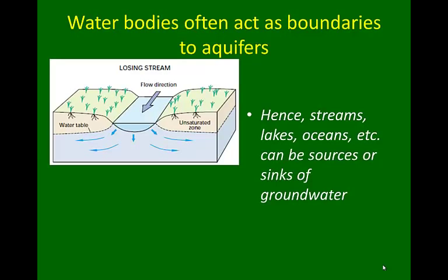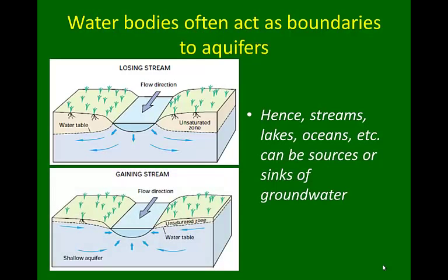Surface water bodies can often act as boundaries to aquifers. Here a stream moves through the center of the landscape, and the water table is generally at a lower elevation on both sides of the stream in the subsurface. We'd expect water to leave the stream and work its way toward the water table, contributing to groundwater in the local aquifer. But the opposite can also occur — if the water table is higher than the water level in a stream, lake, or ocean, flow goes from the groundwater toward the surface water body. Streams, lakes, and oceans can act as both sinks and sources of groundwater.